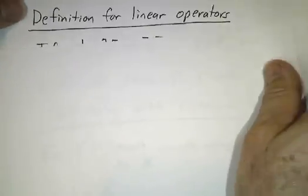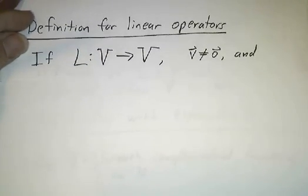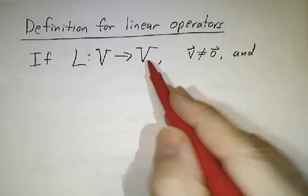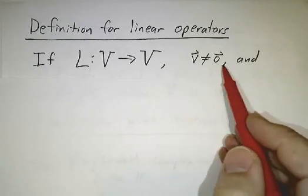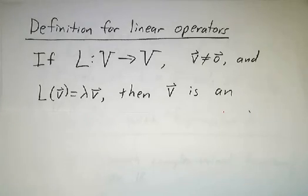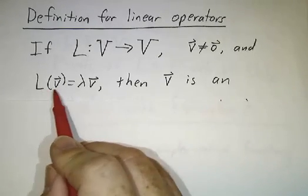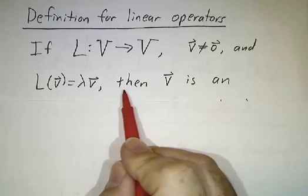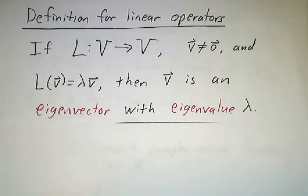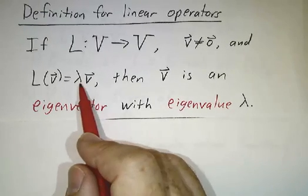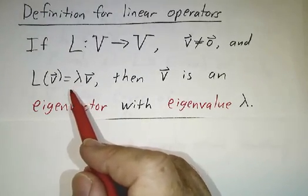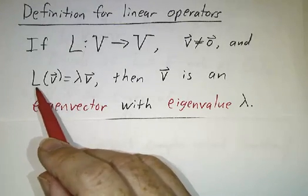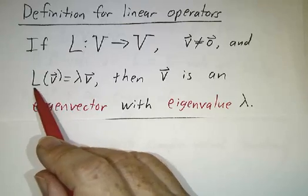Now let's talk about linear operators. Suppose we have a vector space V and a linear operator that sends V to itself, and we have a non-zero vector with the property that when you feed it to L, you get a multiple of what you started from. Then V is called an eigenvector and lambda is called an eigenvalue. It's really the same definition as for matrices — instead of saying A times x, we say L of v.